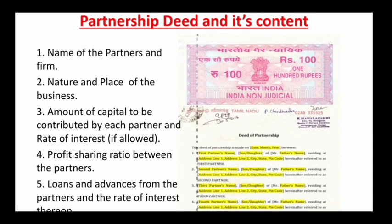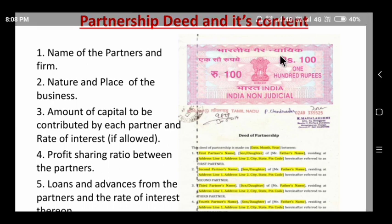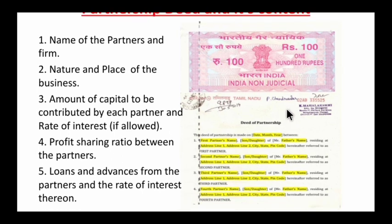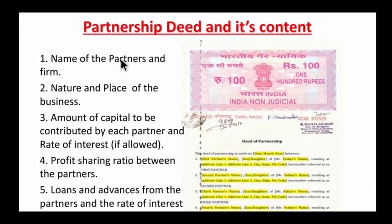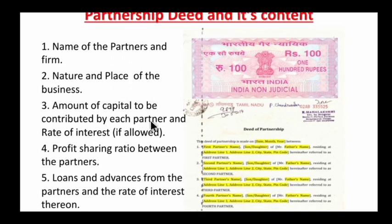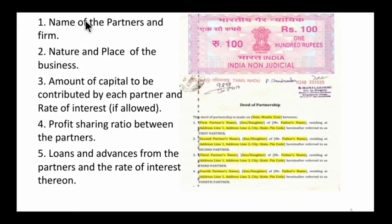Now let's look at the partnership deed. A written agreement between the partners is called a partnership deed. In practical life, this is written on stamp paper. The contents of a partnership deed include: names of partners and the firm, nature and place of business, amount of capital contributed by each partner and rate of interest on capital if allowed.